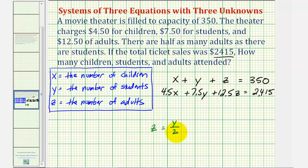Whatever y is, if we divide by 2, that gives us the number of adults. To avoid fractions though, we can multiply both sides of this equation by 2, giving us 2z equals y, or y equals 2z. Let's use this equation instead to avoid fractions. So our third equation is y equals 2z.